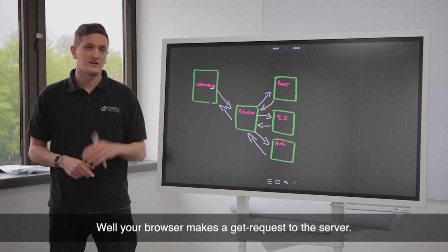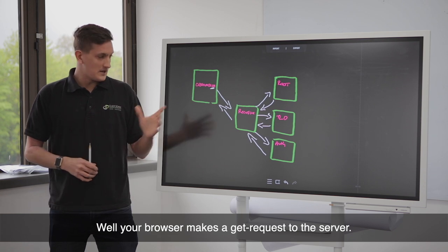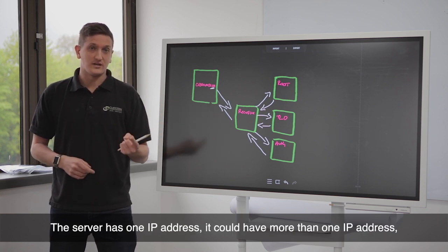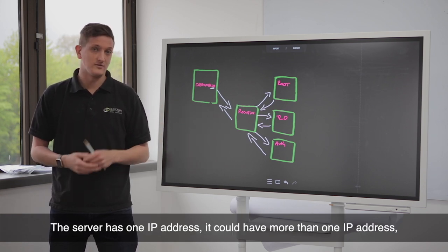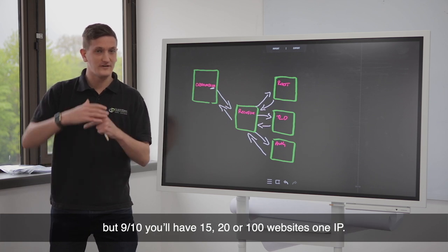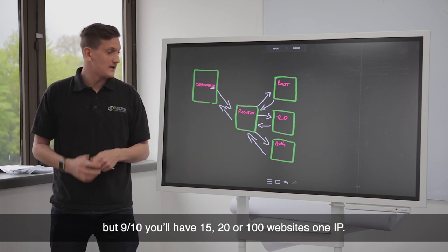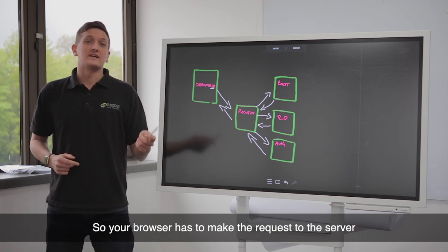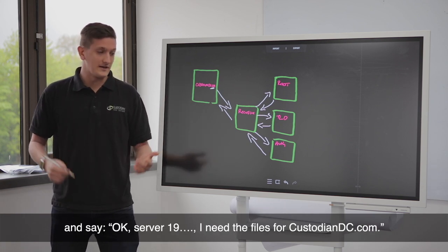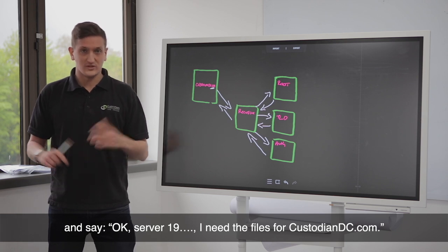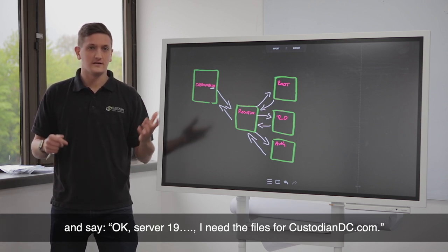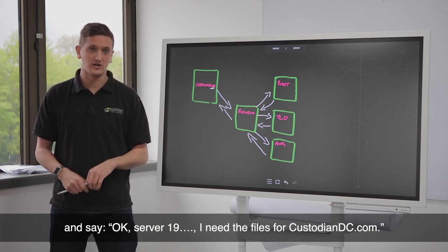Well, your browser makes a GET request to the server. The server has one IP address, could have more than one IP address. But nine times out of ten, you'll have 15, 20, or 100 websites on one IP. So your browser has to make the request to the server and say, okay, server 192.168.1.1, I need the files for custodiandc.com.